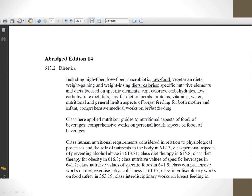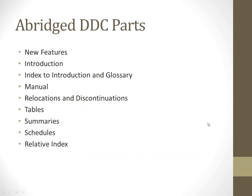Here are some examples of things you will get with the print version - it's available online as well, but here's a shot of how it looks in the print version. The numbers have notes that tell you what things should go in each one. We're going to focus more on abridged Dewey here, but basically full Dewey has these same parts. Generally, each edition will have a section on new features - things that were added since the last edition. The next part of DDC is the introduction.